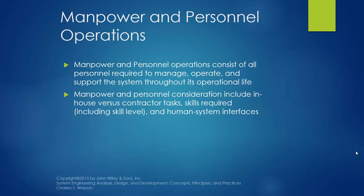The manpower and personnel operations consist of all personnel required to manage, operate, and support the system throughout its operational life. Manpower and personnel considerations include in-house versus contractor tasks, skills required including skill level, and human-system interfaces. If the capabilities are not available in-house, then it must be outsourced to someone with the required skill level needed to maintain the system. It is important to look at what skills exist in-house and whether to train employees to acquire the required skill level or outsource to a contractor.